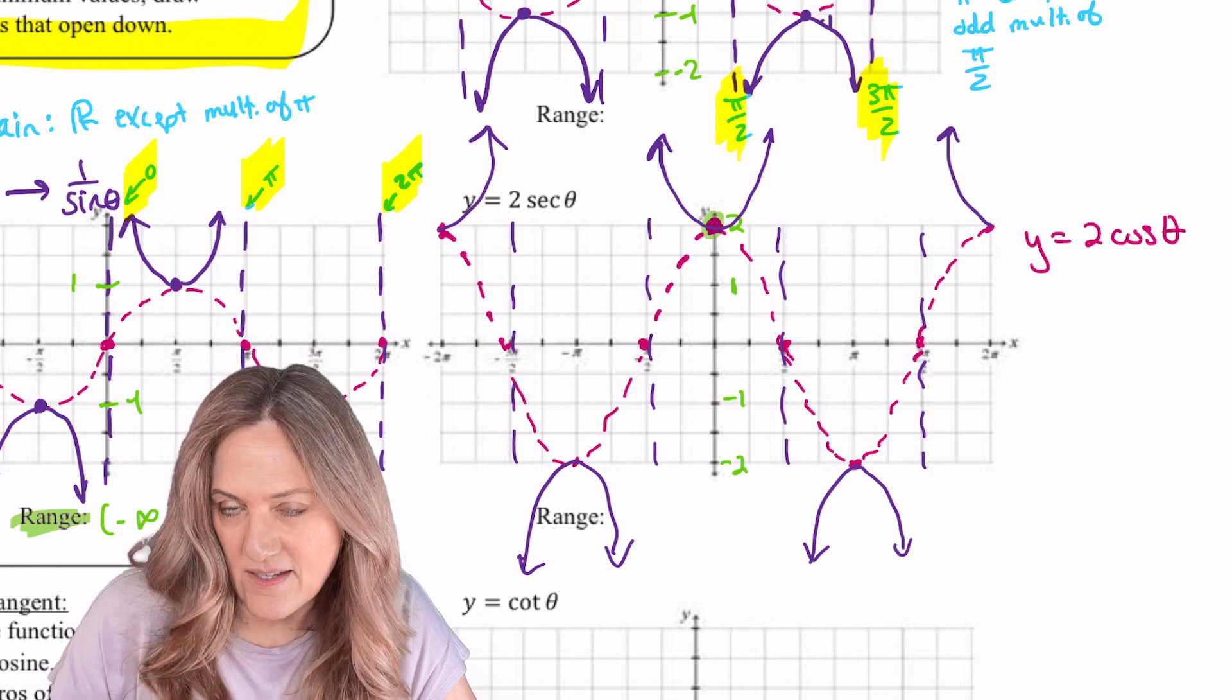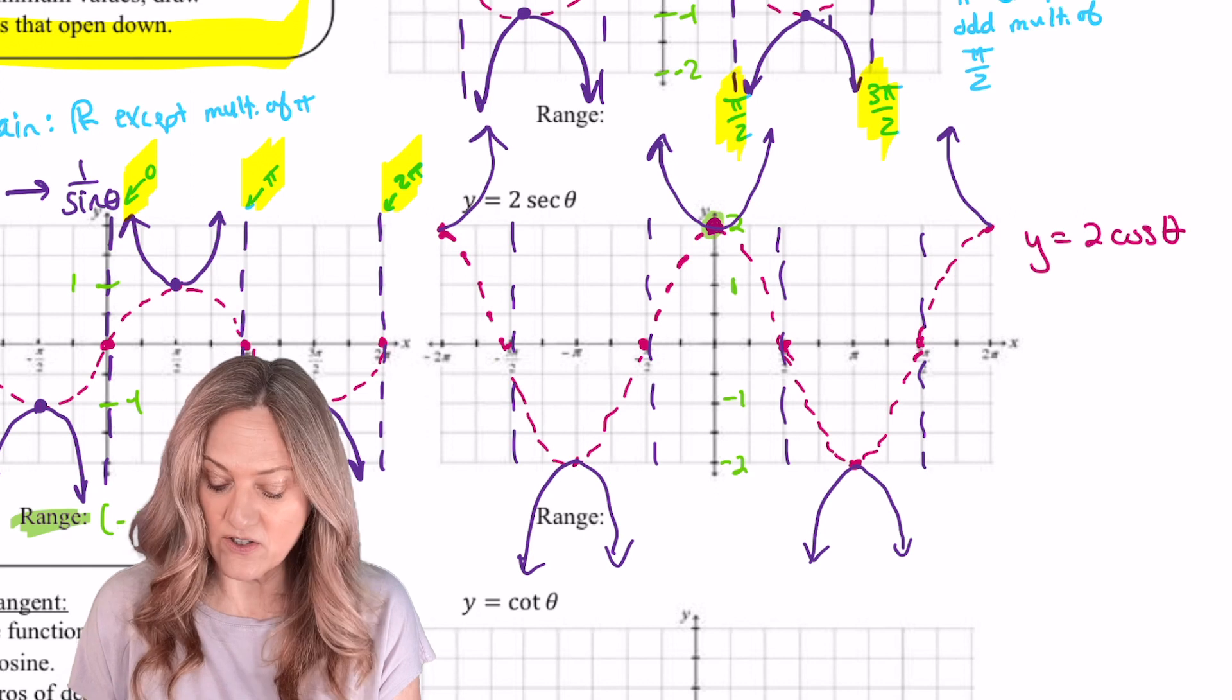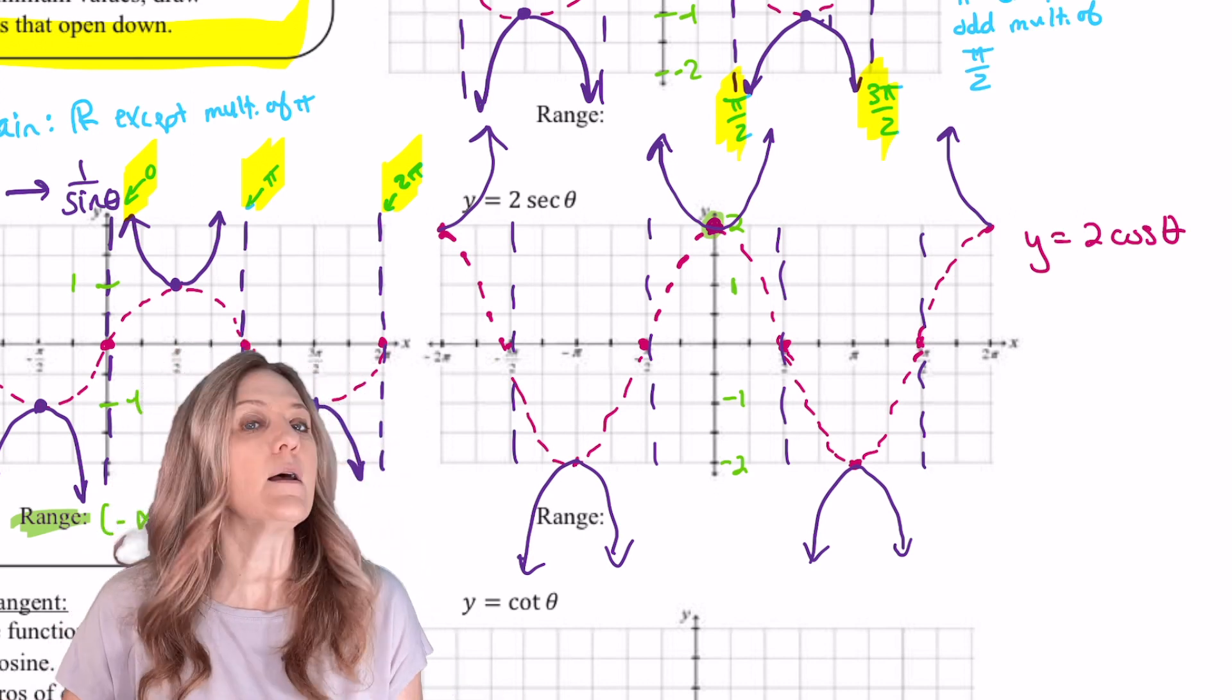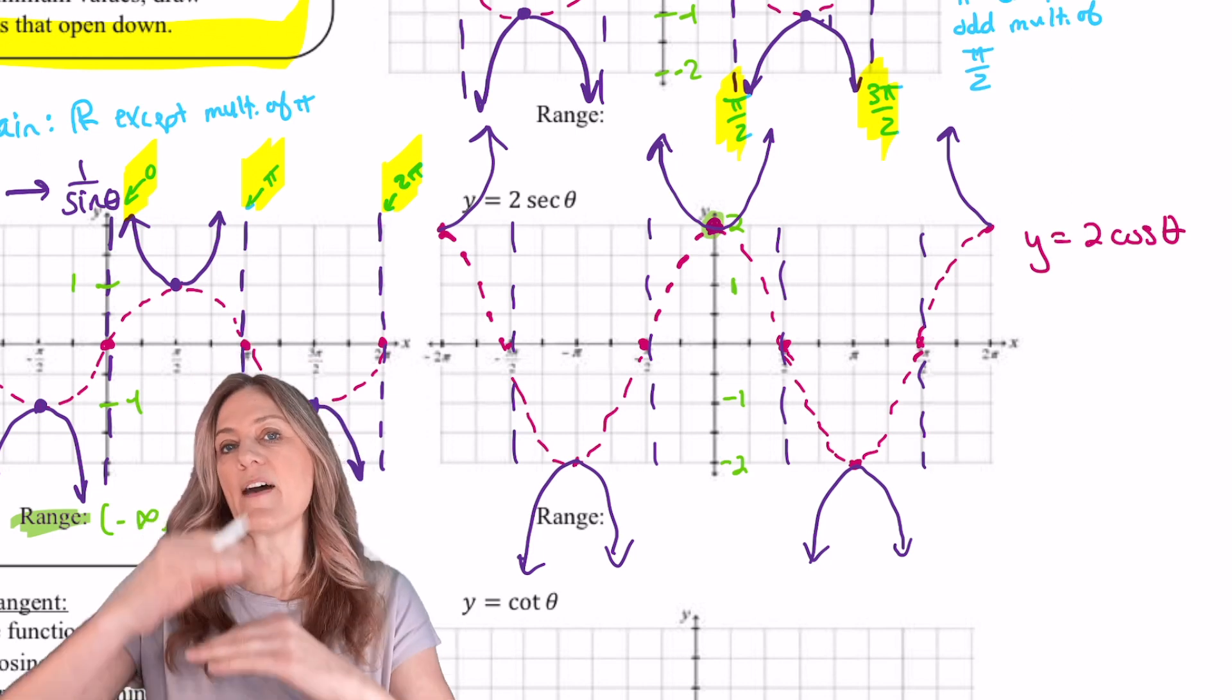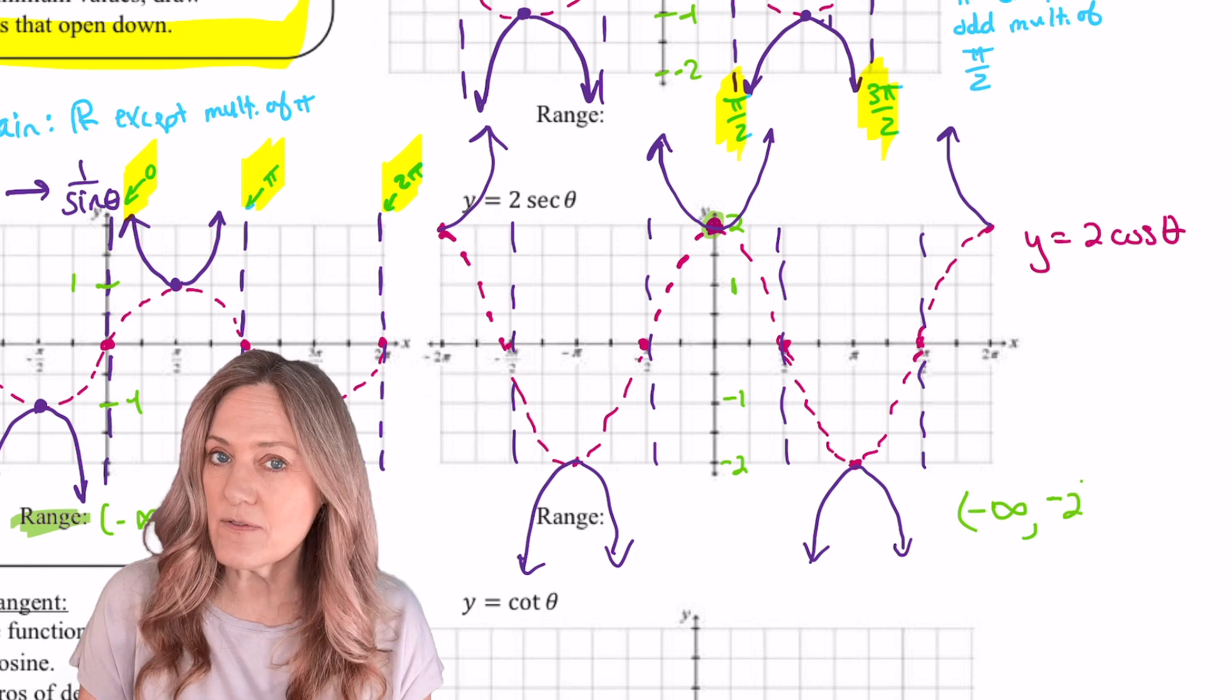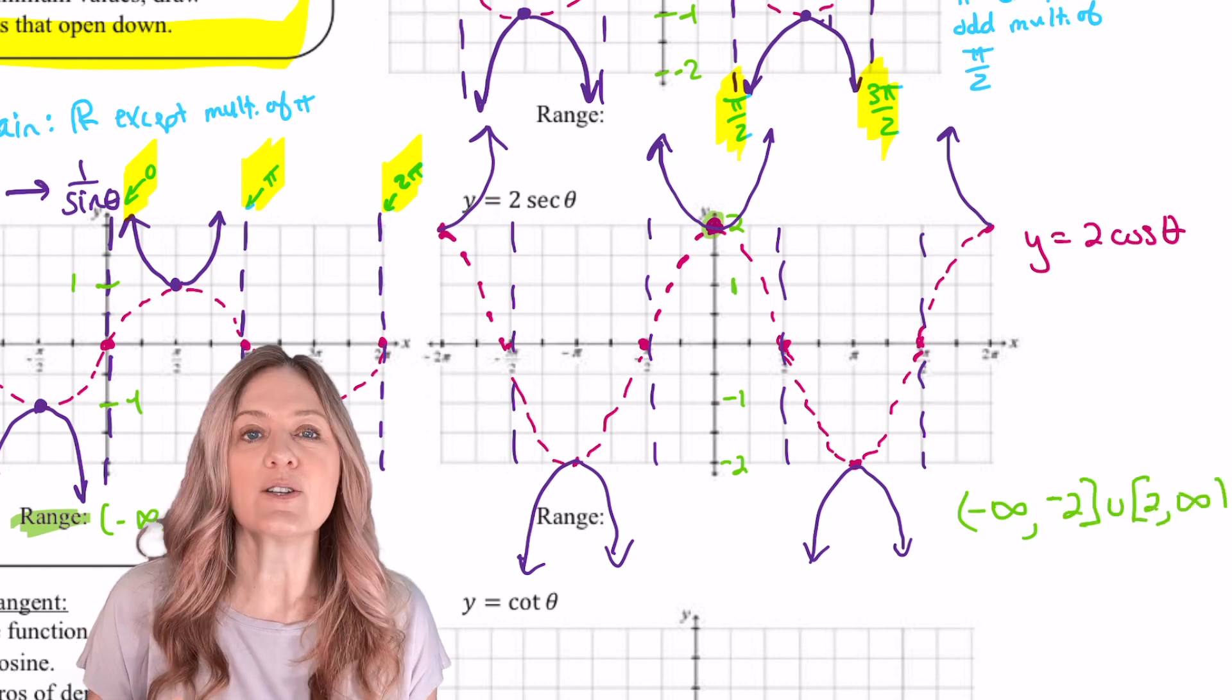Taking a look at this, domain hasn't changed because the location of the vertical asymptotes have not changed. So it's still all reals except for odd multiples of π/2. But the range has changed based on that vertical stretch by a factor of 2. Now the range will be negative infinity to negative 2 inclusive and positive 2 inclusive to infinity.